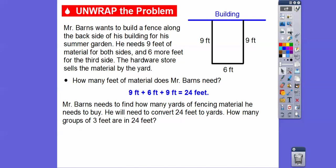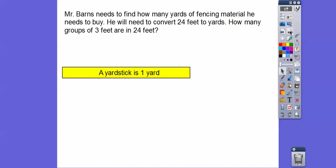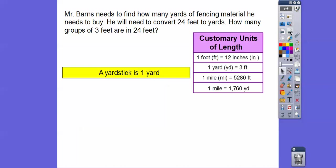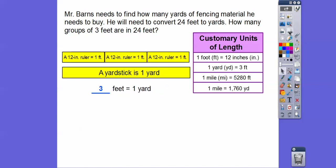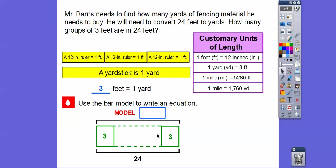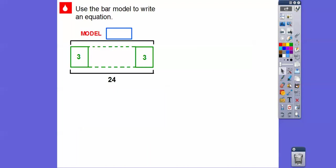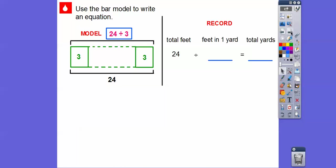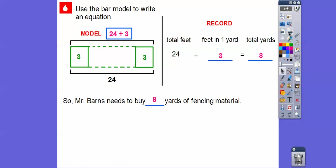So how many groups of 3 are in 24 feet? Here's a yardstick and our conversion table — 1 yard equals 3 feet. Using this bar model, we ask: how many groups of 3 will fit into 24? That's 24 divided by 3. So 24 divided by the 3 feet in a yard gives us 8, because 3 times 8 is 24. Mr. Barnes will need to buy 8 yards of fencing material.